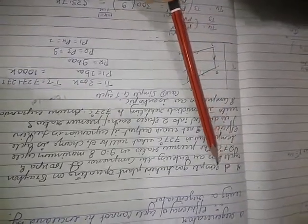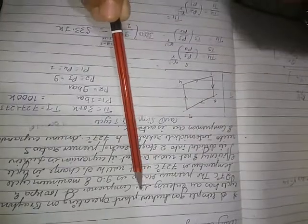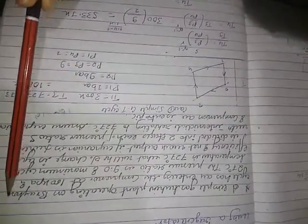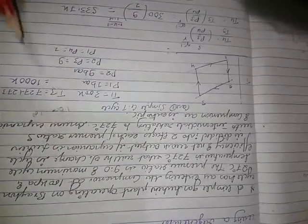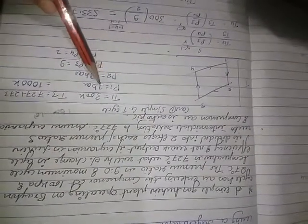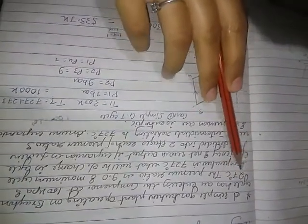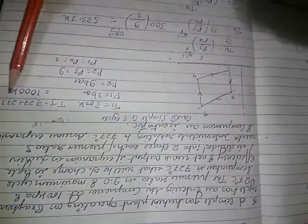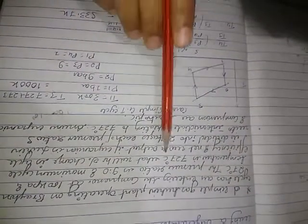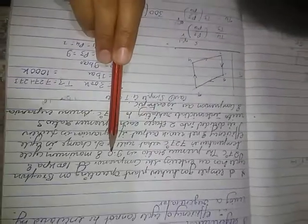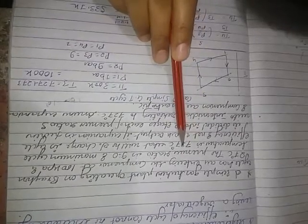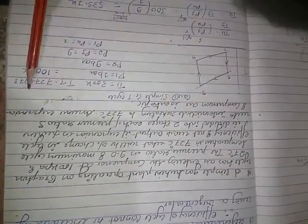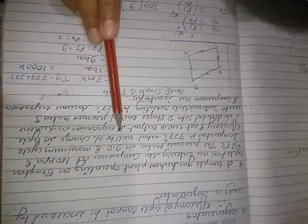Today we will do one problem on reheating a simple gas turbine plant operating on a Brayton cycle, also known as Joule cycle. Air enters the compressor at P1 = 100 kPa, which is 1 bar, and T1 = 27°C = 300 K. The pressure ratio P2/P1 is 9:1, and the maximum cycle temperature T3 = 727°C = 1000 K.